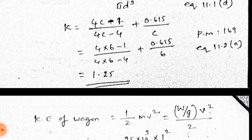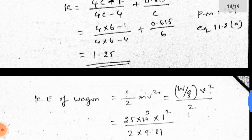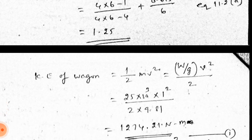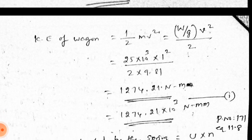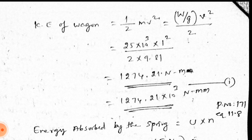The force F is unknown and must be found from energy considerations. The kinetic energy of the carriage equals the energy absorbed by the springs. Kinetic energy = ½mv² = 1.27 × 10⁶ N·mm (converted), giving 1.27 × 10⁶ N·mm.